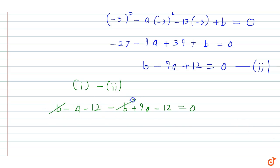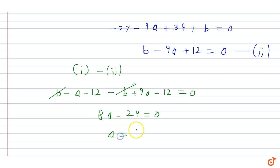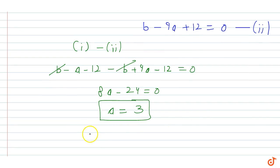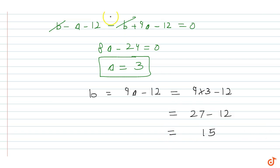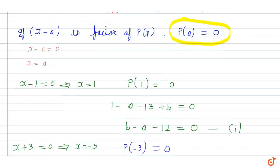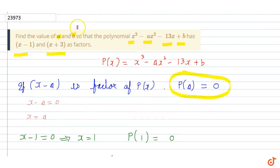So b cancels out, leaving 8a minus 24 equals 0, therefore a equals 24 by 8, which is equal to 3. Now substituting a = 3 into Equation 2: b minus 9 times 3 plus 12 equals 0, so b equals 9 times 3 minus 12, which is 27 minus 12 equals 15. So the final answer is a equal to 3 and b equal to 15.